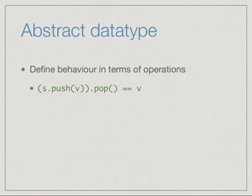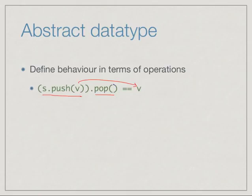We only want the actual operations defined in the abstract interface to be permitted. For instance, if we have a stack s and we push a value v, the property of a stack guarantees that if we immediately apply pop, the value we get back is the last value pushed. In other words, if we execute s.push(v) and then pop, the value returned must be v. This abstractly defines the property of a stack and how push and pop interact, without telling us anything about how internal values are represented.